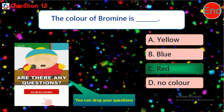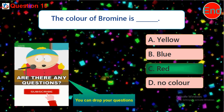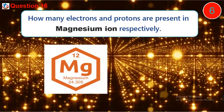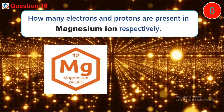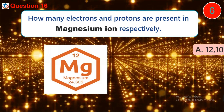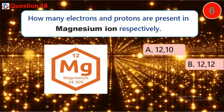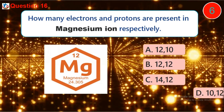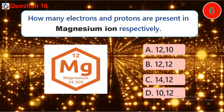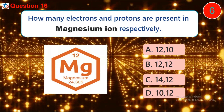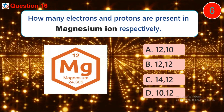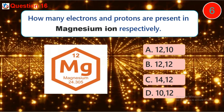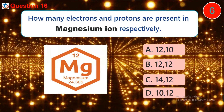Question sixteen: how many electrons and protons are present in a magnesium ion respectively? A. 12, 10, B. 12, 12, C. 14, 12, D. 10, 12.